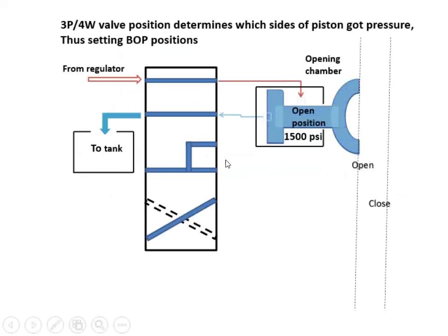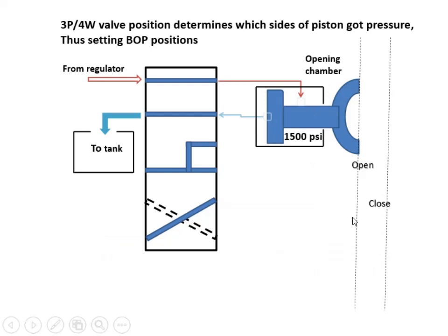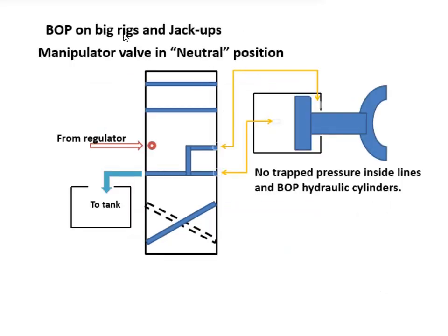The three-position four-way valve determines which side of the BOP piston is connected to manifold and gets hydraulic pressure. By changing the valve position, the side of the piston that connected to hydraulic pressure will be changed, and the BOP position could be changed from open to close and vice versa. On jack-ups rigs and big-land rigs, the middle position of the valve will connect both sides of the piston to the accumulator tank, so there will be no pressure inside the BOP piston chamber and no pressure inside BOP hydraulic hoses. So the piston could be moved almost freely. This position is useful for finding and isolating leaks on the hoses or on seals, and also for troubleshooting the BOP hydraulic system in general. This three-position four-way valve is manipulator type.